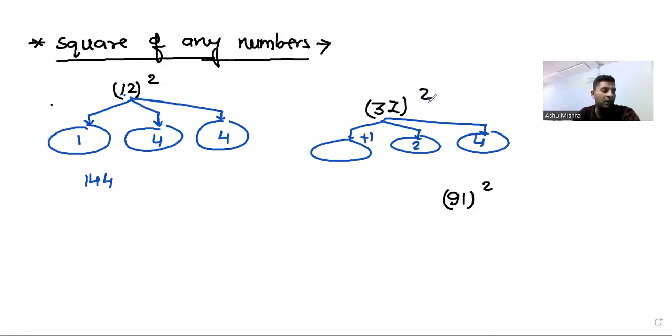3 square is 9, 9 and 1 is 10. This means the square is 1, 0, 2, 4.